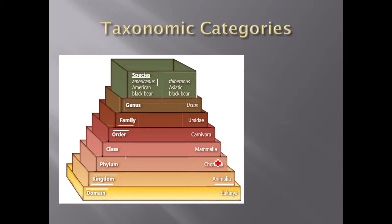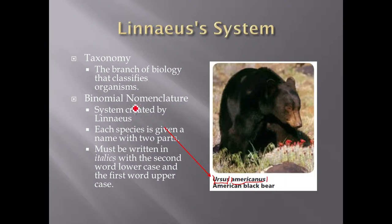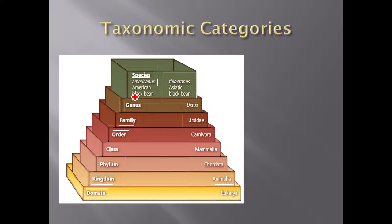Here's how the system works. We classify organisms based upon a system of ever-increasing levels of being specific. We start off with domain. The domain for the black bear is Eukarya, which just means that you are an organism that has a nucleus in your cells — a very broad definition. The next level is the kingdom Animalia, which just says you're an animal. Then you come into the phylum Chordata, which is a fancy way of saying you have a spinal cord and a notochord.